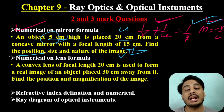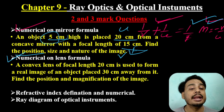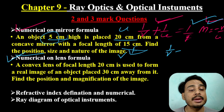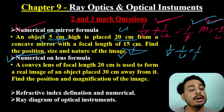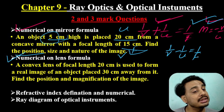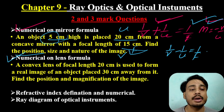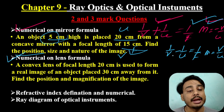The numerical and lens formula: the lens formula is 1/v - 1/u = 1/f. This is the thin lens formula. The magnification is v/u.